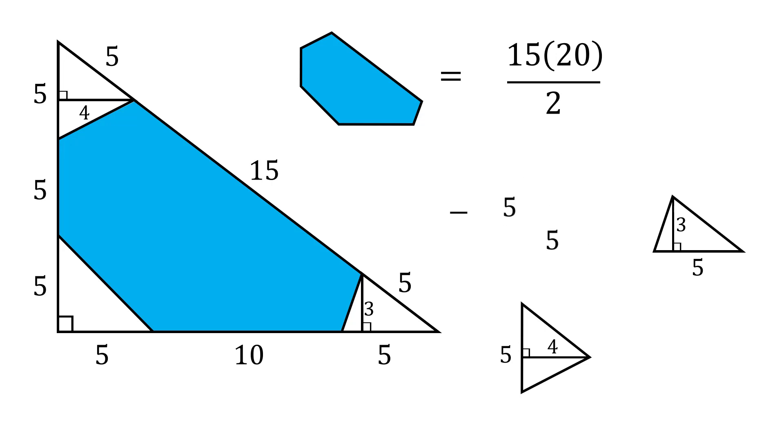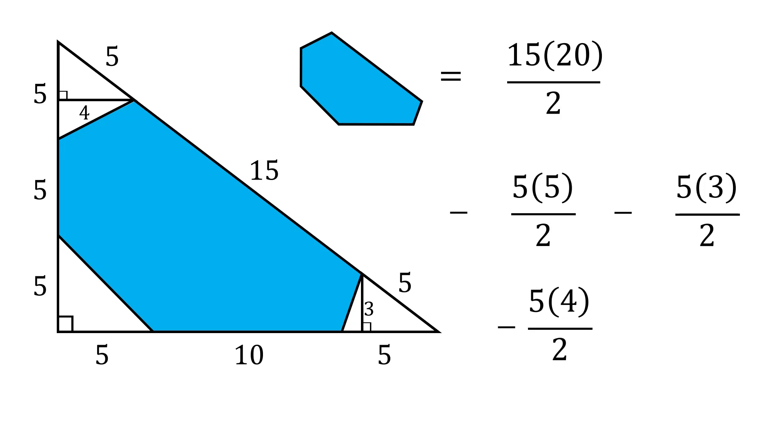This next triangle has an area that's equal to 5 times 5 over 2. Then the next area is equal to 5 times 3 over 2. And the final area is equal to 5 times 4 over 2.